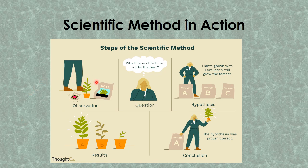We are going to apply the scientific method to answer a particular question. The observation is that we want to know what kind of fertilizer will make our plants grow properly. From that observation we form the question: what type of fertilizer works the best? Now we need to formulate a hypothesis. We have three different kinds of fertilizer — A, B, and C — and our hypothesis reads: plants grown with fertilizer A will grow the fastest.